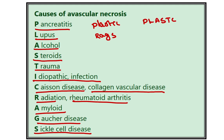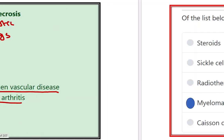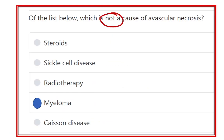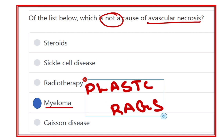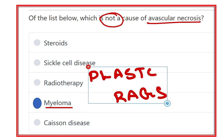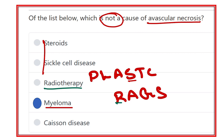Using the mnemonic 'PLASTIC CRACKS,' the answer to the question — which is NOT a cause of avascular necrosis — is myeloma, because myeloma does not appear anywhere in the mnemonic. Steroids correspond to S, radiotherapy to R, and caisson disease to C. We should remember this mnemonic for exams, as it helps recall the definitive causes when we might otherwise forget them. Thank you.